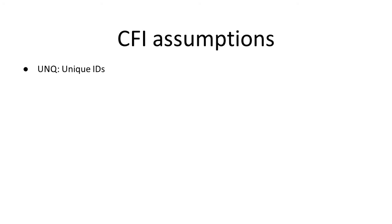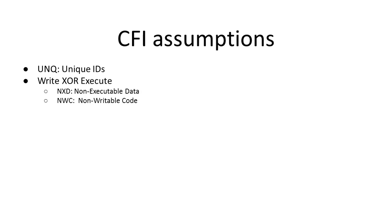CFI makes three assumptions that must be fulfilled in order to guarantee protection. First, there is the unique constraint: each ID must be unique and may be present only once in the entire binary, including bytes of opcodes that may by chance match an ID. Secondly, CFI requires non-executable data; otherwise, it would be easy for an attacker to add code in the form of data, have that data start with a specific ID, and redirect control flow to that address. Thirdly, non-writable code must be present. If not, an attacker could circumvent CFI checks simply by overwriting them or overwriting their ID labels.